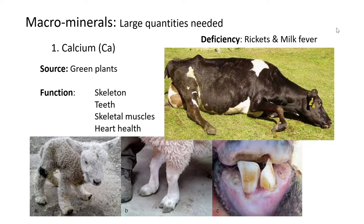The first thing that all animals need in bulk is calcium. Just remember the symbol Ca, capital C, small a, to symbolize calcium. You have to know a source, a function, and what deficiency is caused when these animals do not get enough of these macrominerals.